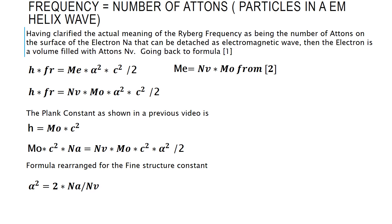We find that the fine structure constant squared is nothing else than the number of atoms on the surface versus the number of atoms in the volume of the electron.